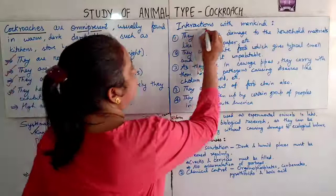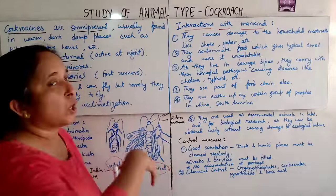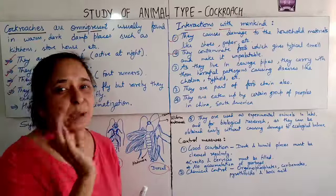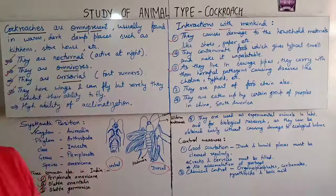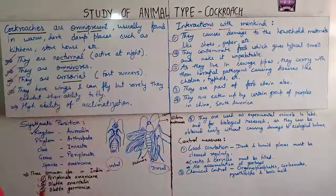The next sub-topic is the interaction of cockroaches with mankind. These cockroaches cause damage to household materials like paper, shoes, and cloth. They contaminate food, giving it a typical smell and making it unpalatable. They live in sewage pipes and carry many harmful pathogens, causing diseases such as cholera and typhoid.